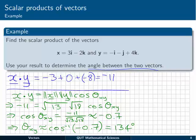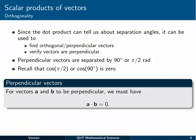So that's one of the uses for the dot product: finding angles between vectors. Given that the dot product can tell us that sort of information, it can also tell us when vectors are orthogonal or perpendicular, at right angles. And it can be used to verify when vectors are perpendicular.